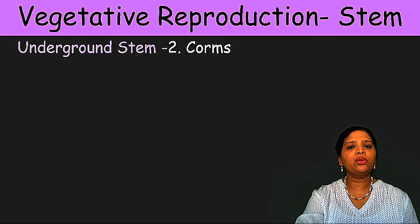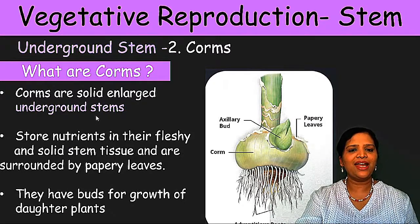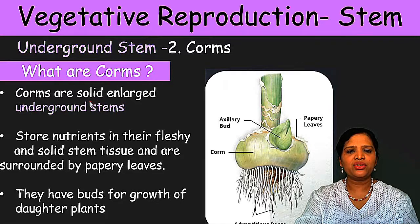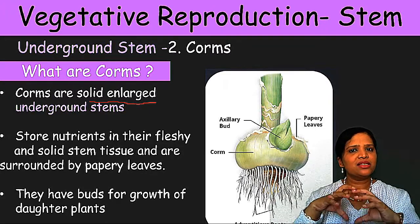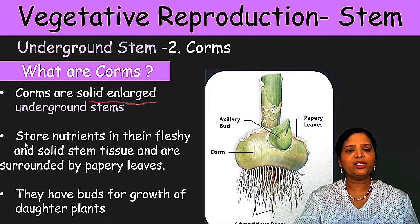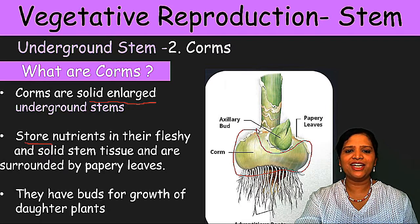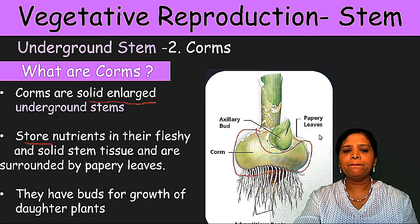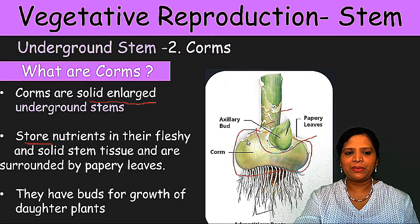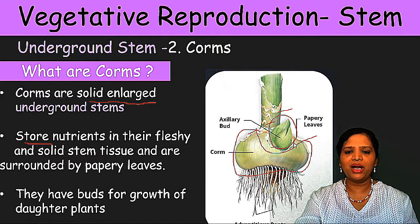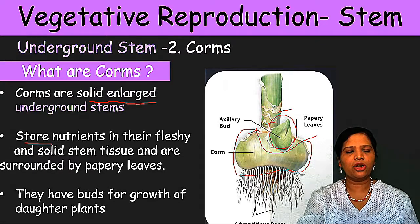The next method of underground stem modification is called corms. Corms are solid enlarged underground stems — unlike rhizomes, the size is very big and bulged. They also store nutrients, and have an outer papery covering. They have buds, and from the bud the whole daughter plant will grow. Examples for corms are Amorphophallus — the world's tallest flower, almost two and a half times the size of a human — and Colocasia, a very common vegetable where you can see the outer scaly covering and terminal buds with short roots. When you plant this corm, the whole plant starts developing.